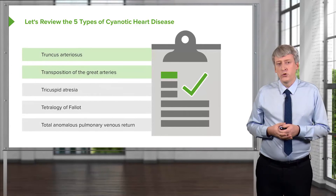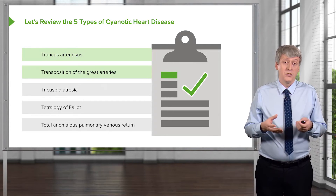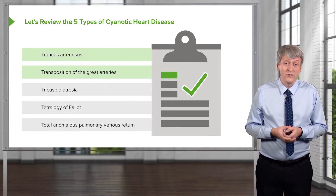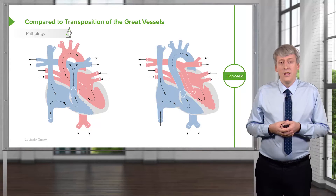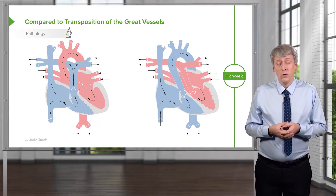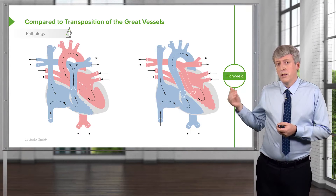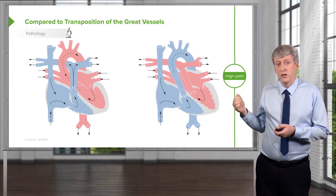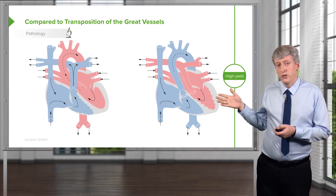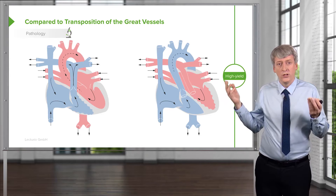Let's move on to transposition of the great arteries, also called transposition of the great vessels. In this condition, the aorta and the pulmonary artery are switched. In a normal patient, blood comes back from the inferior and superior vena cava to the right atrium, to the right ventricle, and then out to the pulmonary artery, which goes to the lungs.